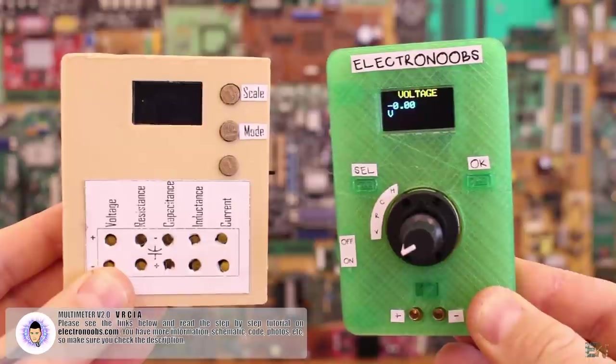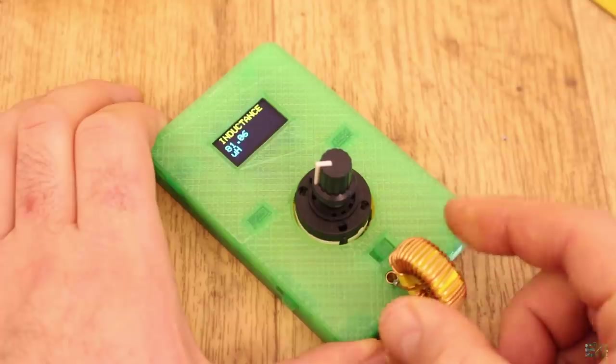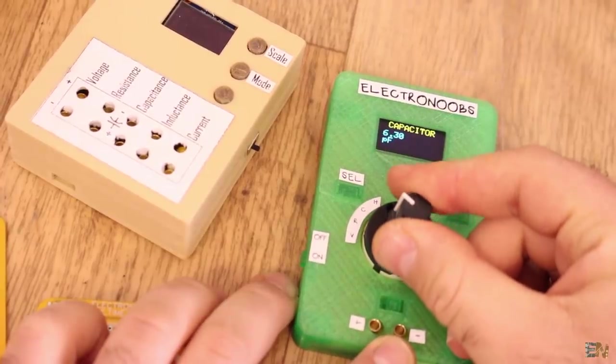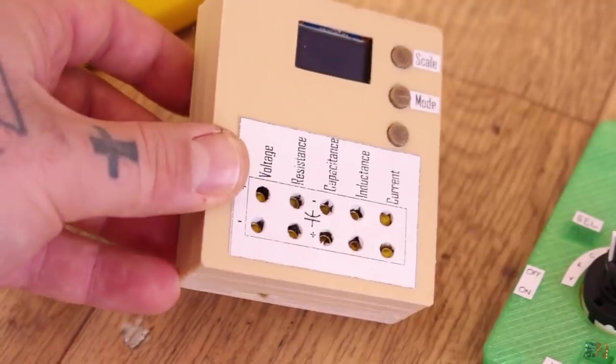On my channel you can find tutorials on how to measure resistance with Arduino, how to measure current, inductance, capacitance and voltage all using Arduino. But I had a lot of comments to merge all meters in just one and that's what I've made in the past tutorial.